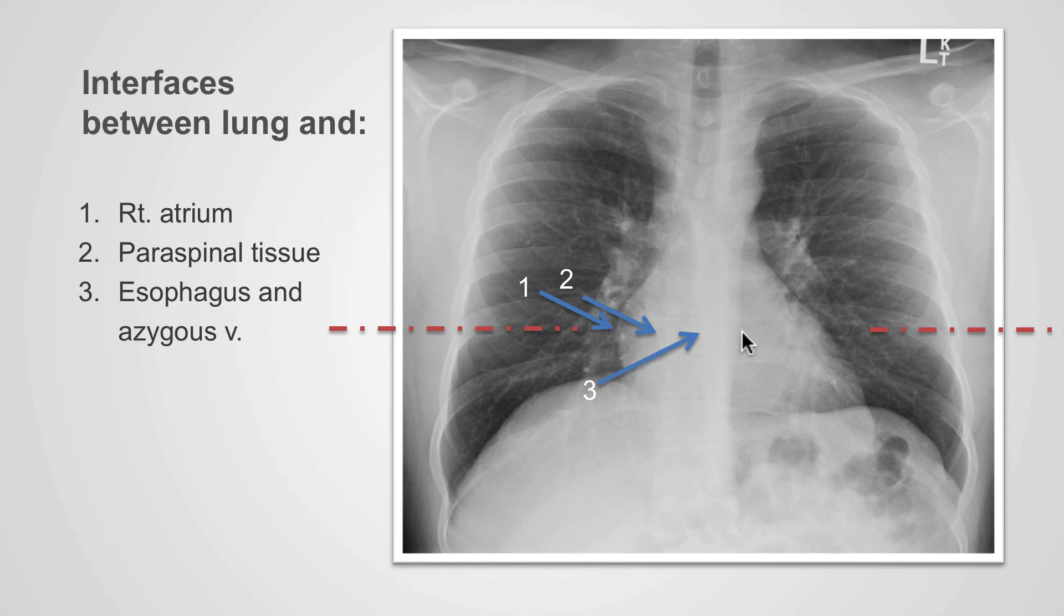Can you identify what is causing this interface? That is caused by the descending aorta. And at this level, that is caused by the left ventricle.